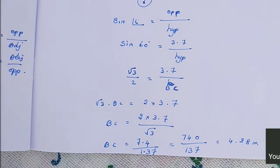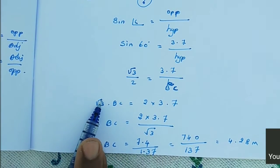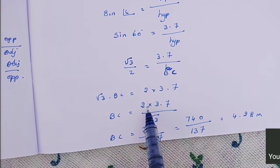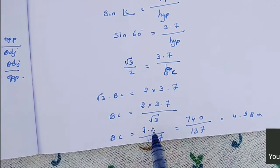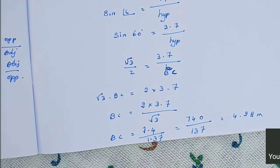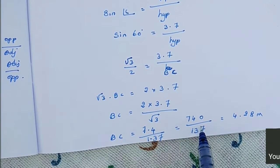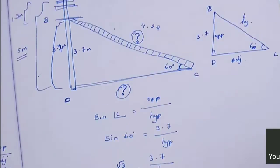By cross multiplication: root 3 into BC equals 2 into 3.7. So BC equals 7.4 divided by root 3. In the problem they give root 3 equals 1.73, so we substitute 1.73. Multiply 100 on numerator and denominator to make it a whole number: 740 divided by 173, giving 4.28 meters. So BC, which is the hypotenuse — that is the ladder length — is 4.28 meters.